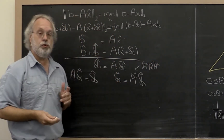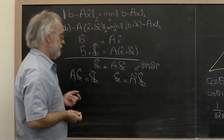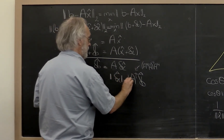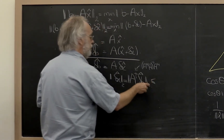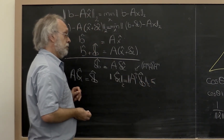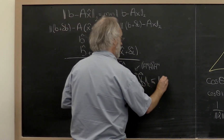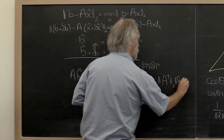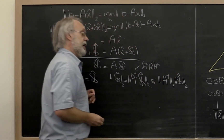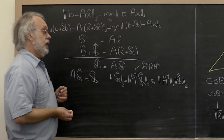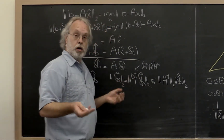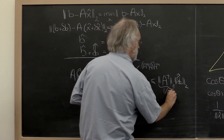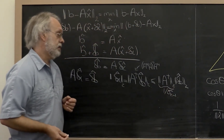We're continuing to assume that the columns of A are linearly independent. Taking the 2-norm on both sides and using the submultiplicative property, we get that ‖δx̂‖₂ is less than or equal to the 2-norm of the pseudo-inverse of A times ‖δb̂‖₂. And as a homework exercise, you can determine that the 2-norm of the pseudo-inverse of A equals 1 over the smallest singular value of A, σ_{n-1}.